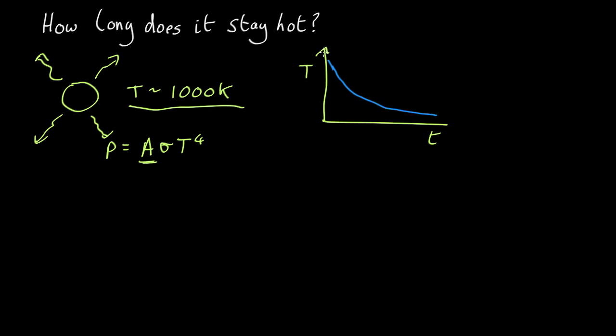But let's just assume it cools down steadily at its initial rate, and we can estimate how long it will take to get rid of the energy that we calculated it would have to begin with. So it had an energy of about 10^36 joules. How long will it take to get rid of that if it's at a temperature of a thousand Kelvin?